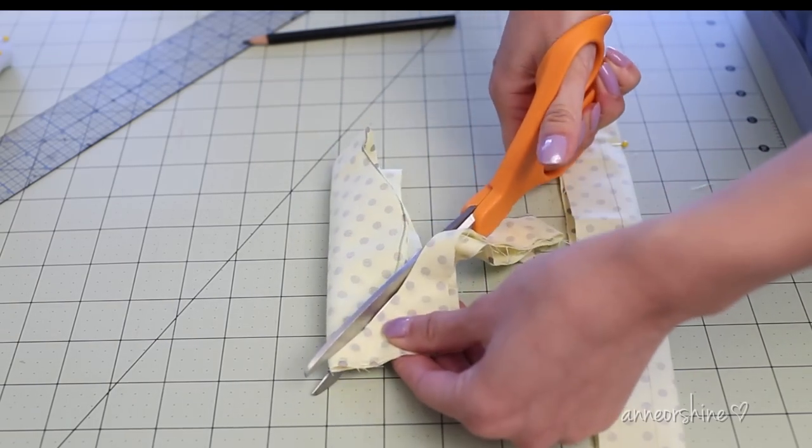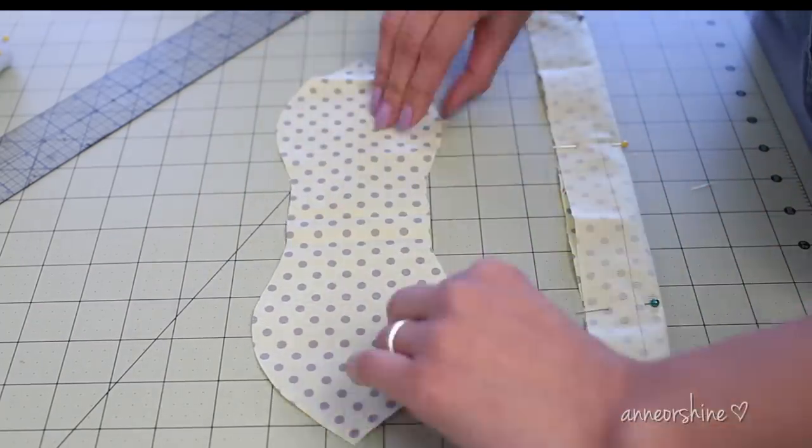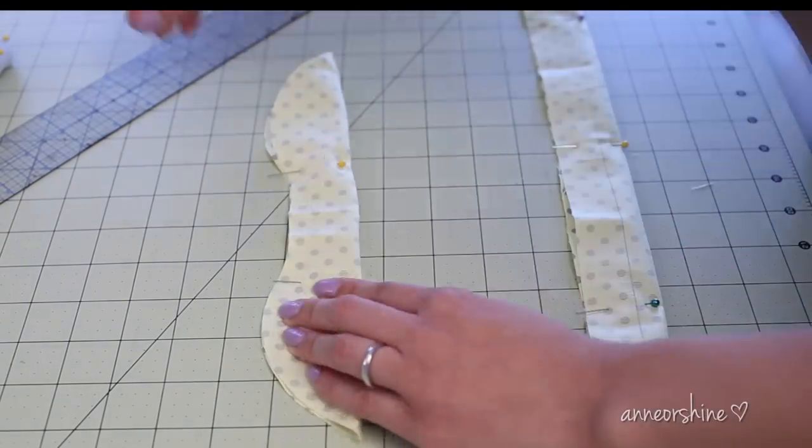You should now have something like this once it's opened. Now fold it lengthwise in half and then pin it along the fold like how I'm doing it right here.